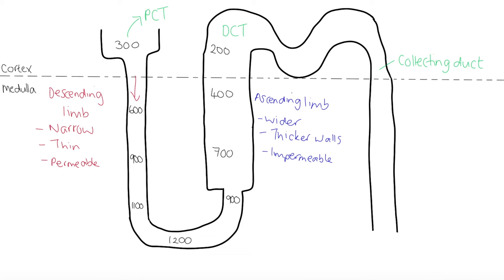Surrounding the descending and ascending limbs is interstitial fluid, or interstitial space. In this space there are lots of capillaries where water can be reabsorbed. So if water moves out of the loop of Henle through the descending limb into the interstitial space, it can be reabsorbed into the bloodstream via those capillaries.